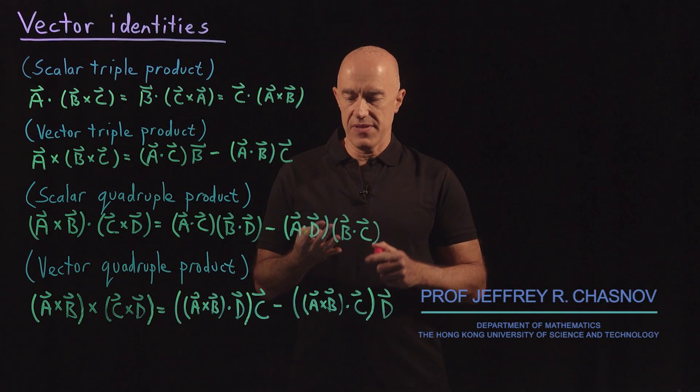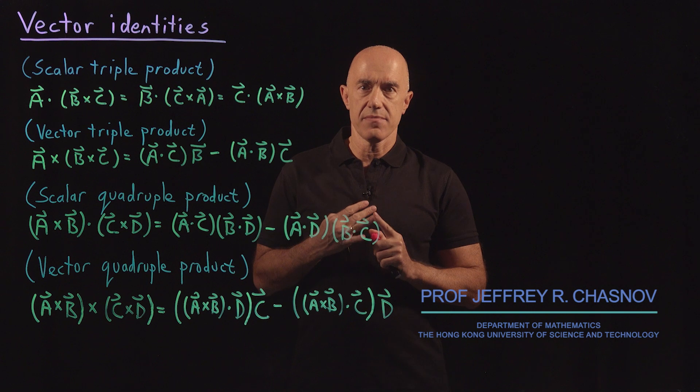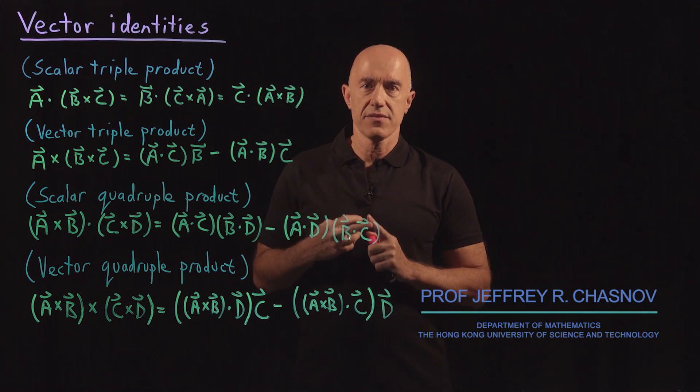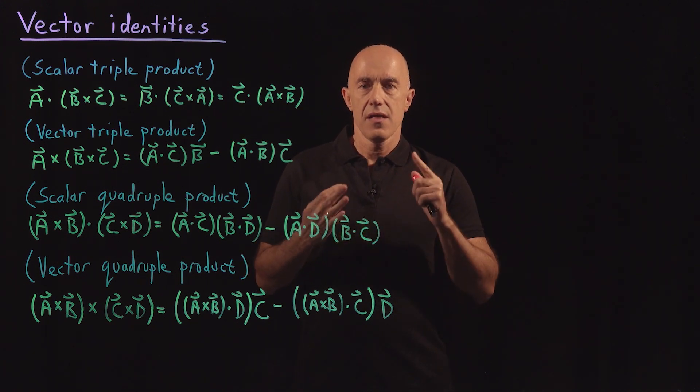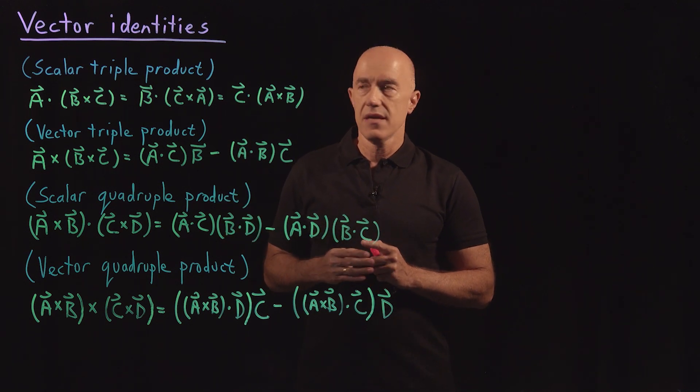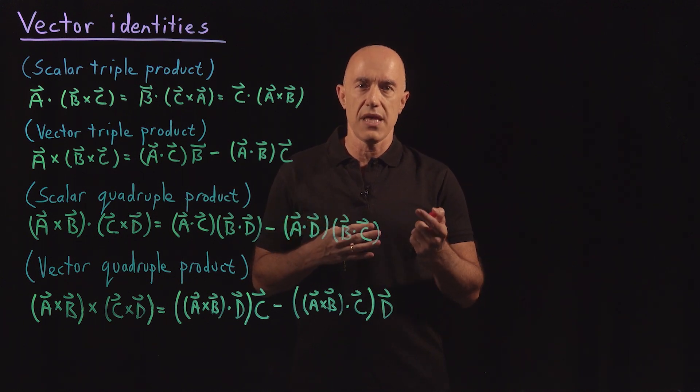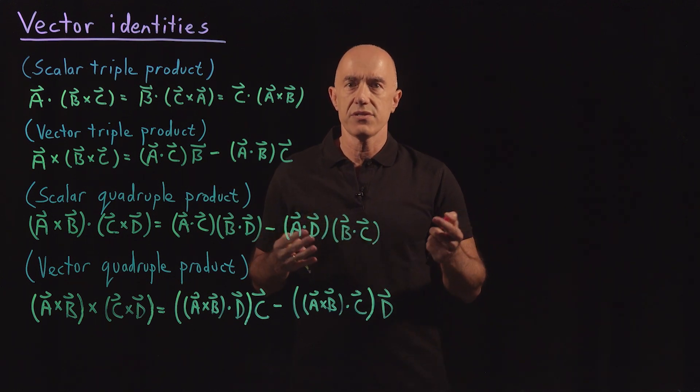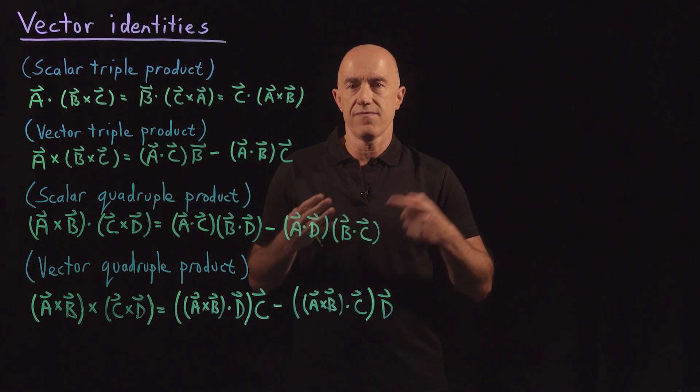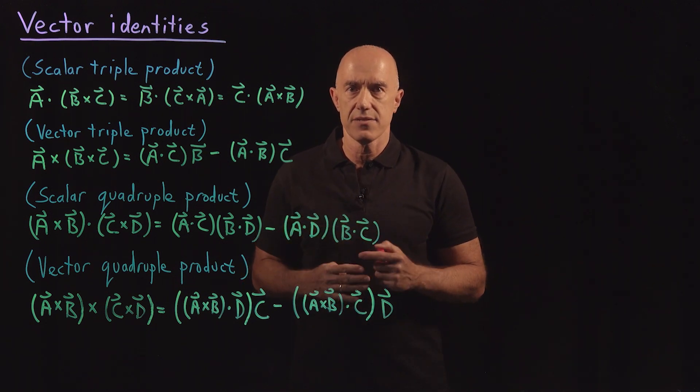So we learned about the Kronecker Delta, the Levi-Civita symbol, and the Einstein Summation Convention. The purpose is to prove some vector identities. These vector identities are useful when you manipulate equations such as occurs in fluid mechanics or in electricity and magnetism.